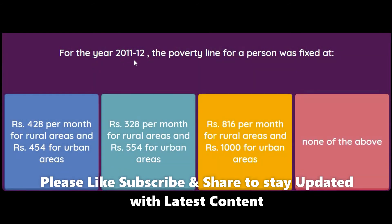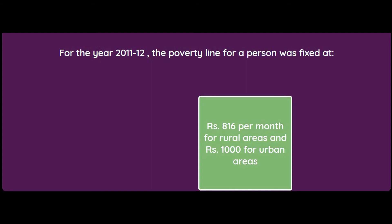For the year 2011–12, the poverty line for a person was fixed at — Rs. 428 rural and Rs. 454 urban, Rs. 328 and Rs. 554, Rs. 816 and Rs. 1000, or none of the above? As we read from page 32, the answer is Rs. 816 per month for rural areas and Rs. 1000 for urban areas.